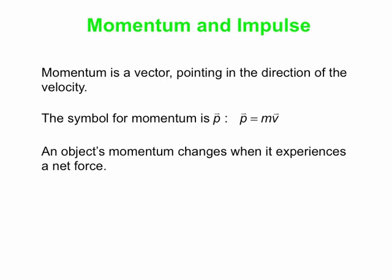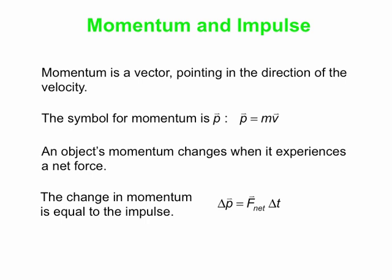Anytime an object experiences a net force, its momentum will change. And this change in momentum is given by this impulse equation. Delta p, the change in momentum, is the net force multiplied by the time interval.